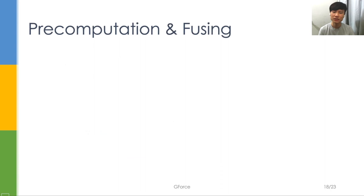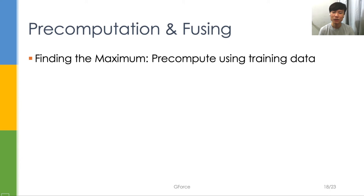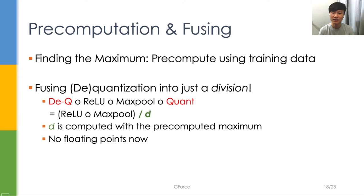To solve these issues all together, we have two ideas. Instead of finding the maximum amount of inputs online, we compute it by feeding the training data into the model and extract the maximum. Our next ingredient is fusing the dequantization of a linear layer with the quantization of the next linear layer. We prove that if the nonlinear layers in between are ReLU or max pool, we can perform the dequantization and quantization together as a division, and the divisor can be pre-computed. Now, no floating-point representation is needed.